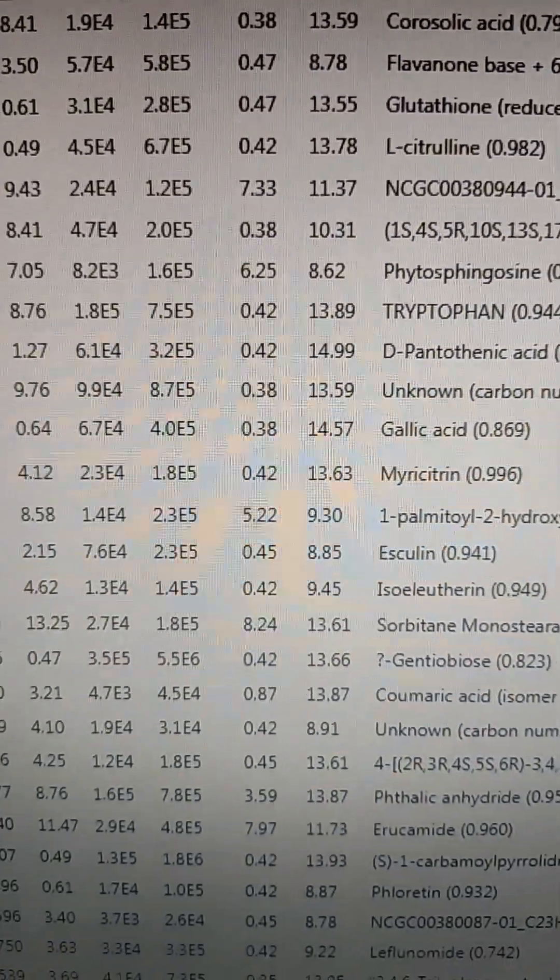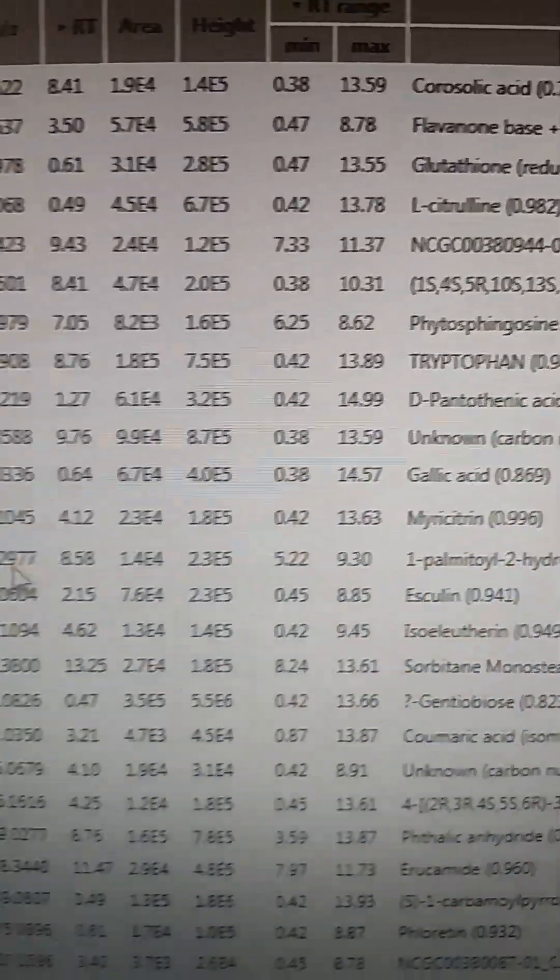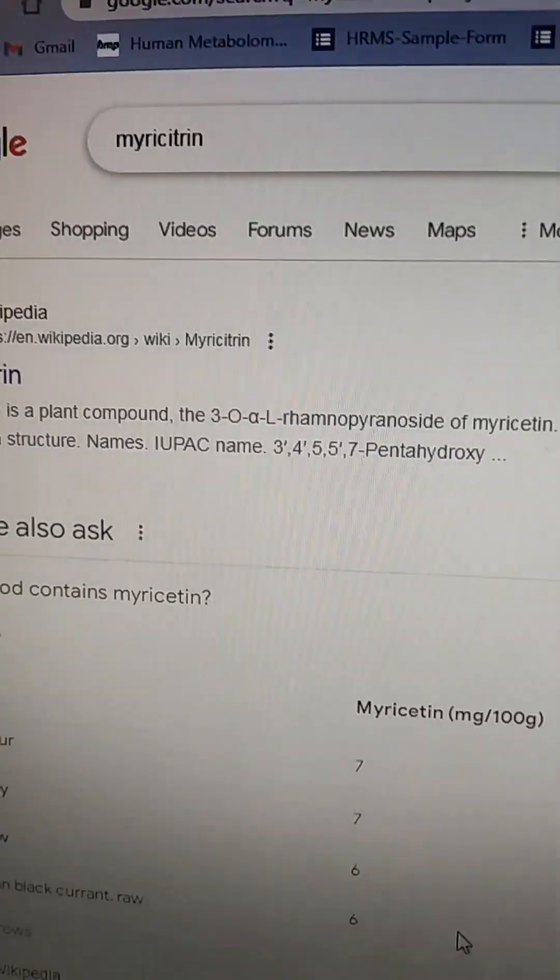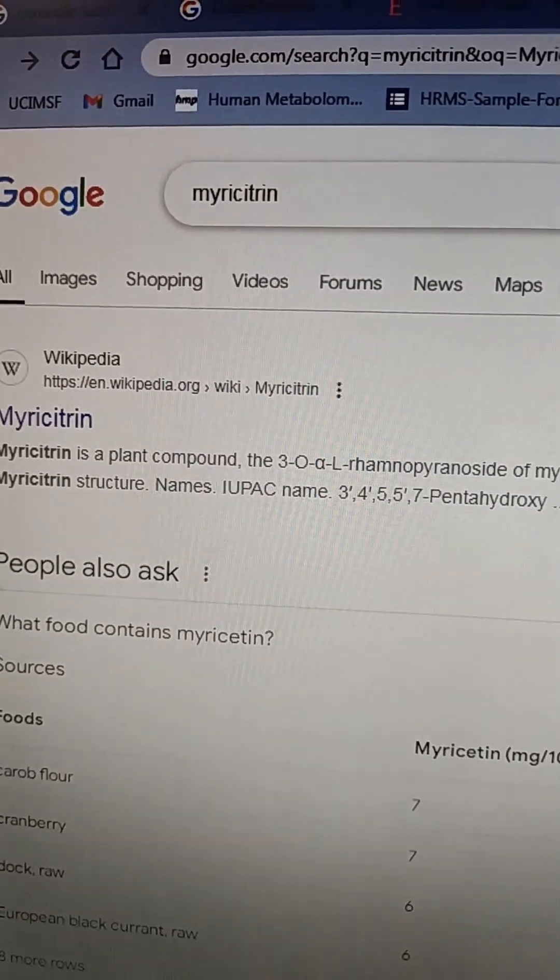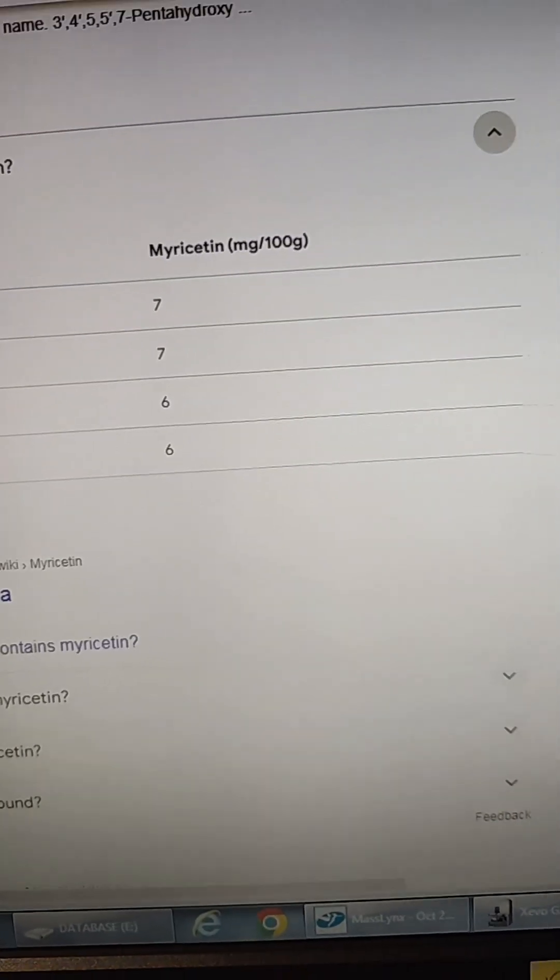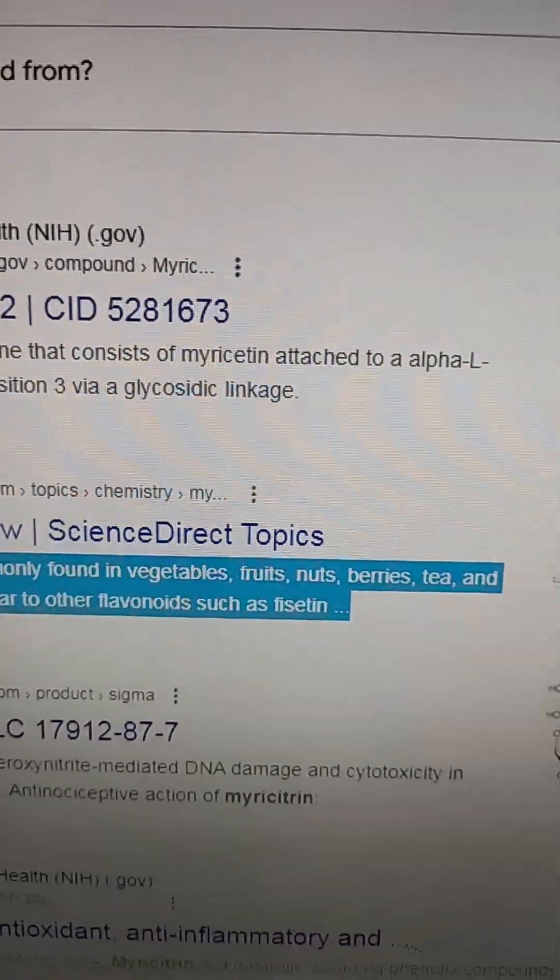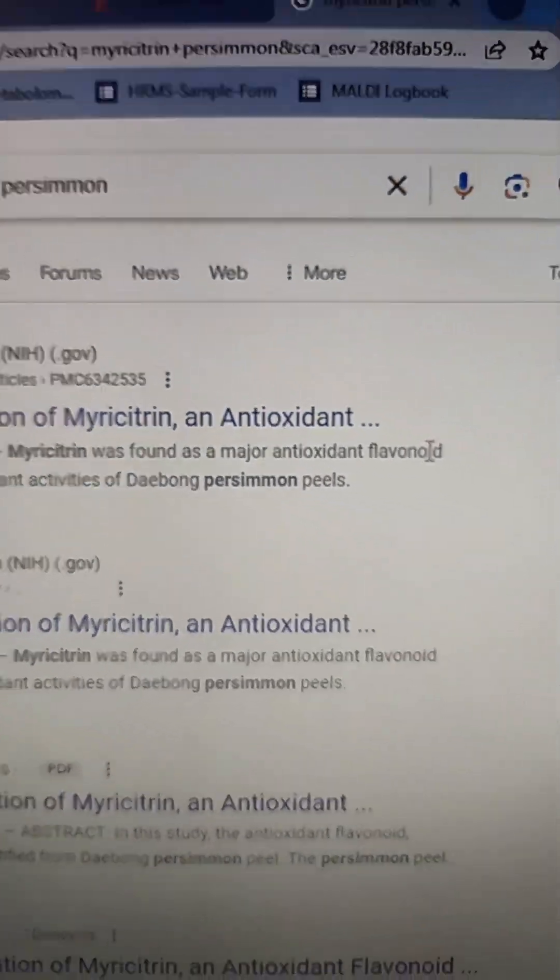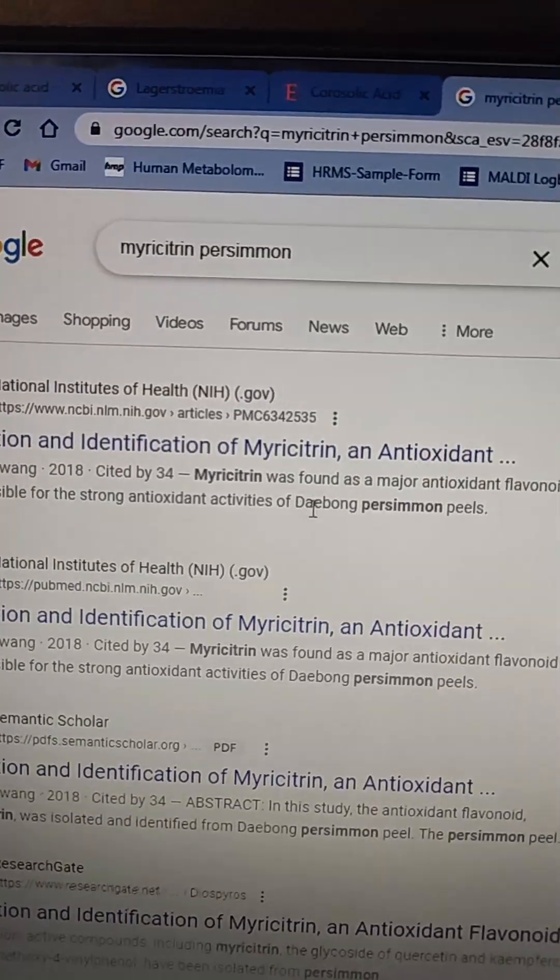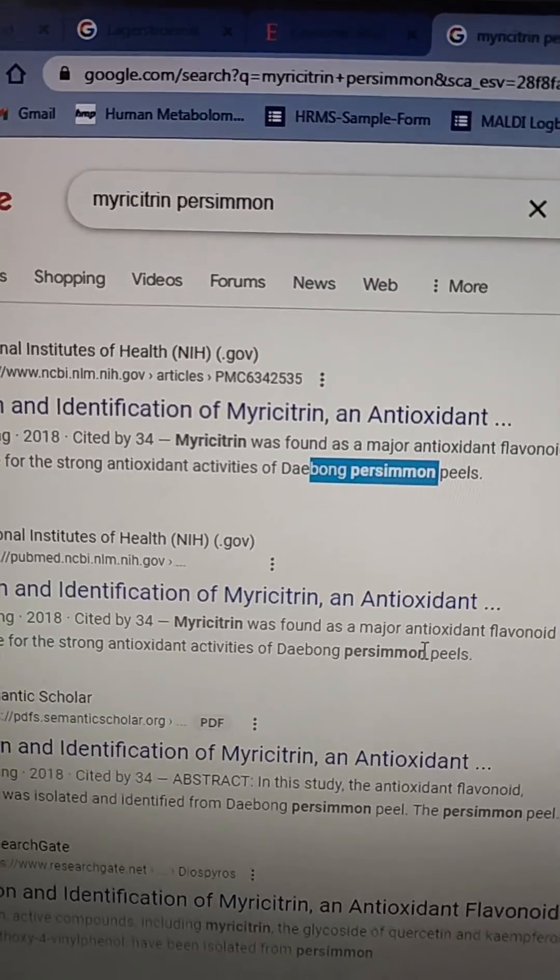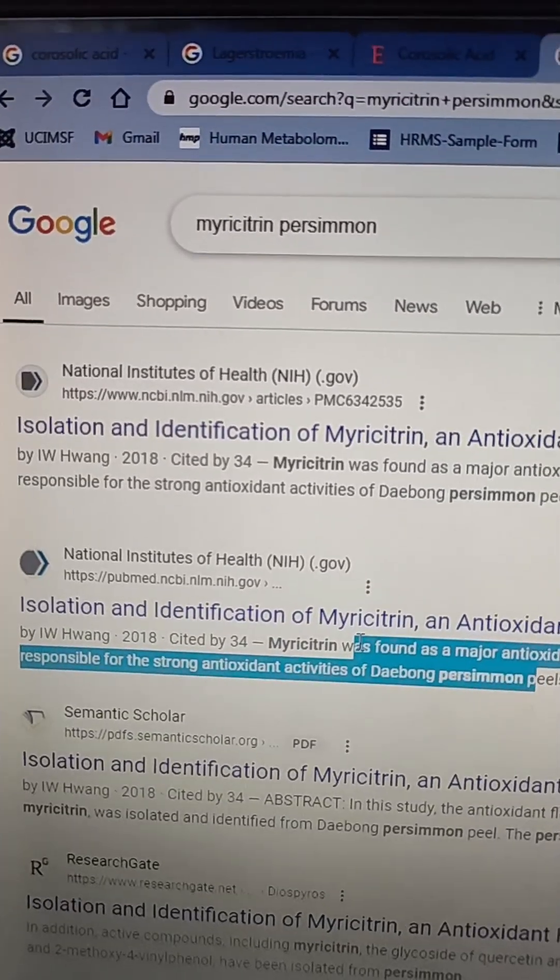Another really interesting thing we're seeing is this myricitrin. Myricitrin at 465 is another thing going up and down, and this is a plant metabolite. Again, it's an O-linked flavone. Looks like they're finding it in persimmons. It's in a bunch of different fruits. And it's a flavonoid found in fruits, nuts, berries, and tea. Myricitrin was found as a major antioxidant in a flavonoid, responsible for strong antioxidants of persimmons. So this is one of the major antioxidants in persimmons. Pretty cool.